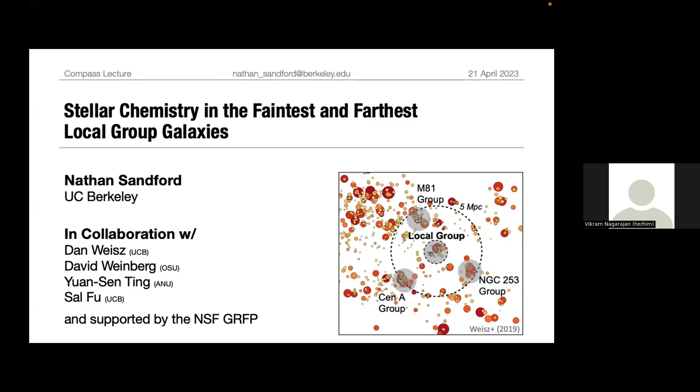Nathan is currently a sixth and final year PhD student and NSF fellow in the UC Berkeley Department of Astronomy, working under the supervision of Professor Dan Weitz. His research broadly revolves around the chemical evolution of the Milky Way and its neighboring galaxies, which can be used to study a wide range of stellar and galactic physics.